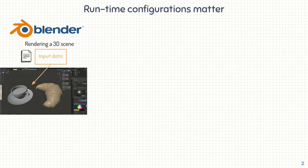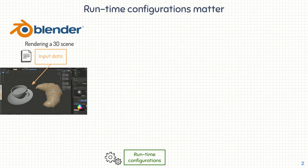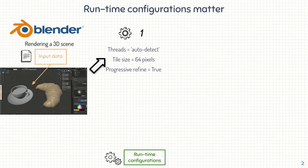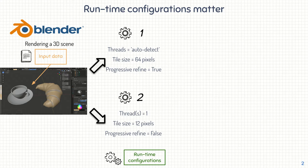Blender is a configurable system, so the end user can tune runtime options to adapt the rendering to their needs. In this example, we use two different runtime configurations. On the top, runtime configuration 1 with auto-detection of the number of threads, a big tile size, and with progressive refine enabled. On the bottom, runtime configuration 2, with a single thread, a tiny tile size, and without progressive refine.